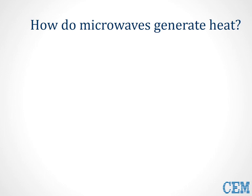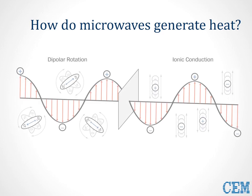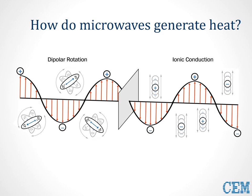Microwave heating is a very different process from conventional heating — like an oil bath, a hot plate, or a Bunsen burner. Microwaves couple directly with the molecules present in your reaction mixture, not with your reaction vessel. This results in instantaneous selective heating of anything that will react to either dipole rotation or ionic conduction. These are the two fundamental mechanisms for transferring energy from microwaves to a substance.